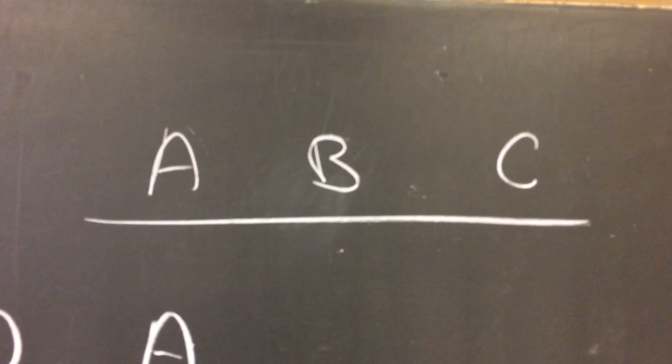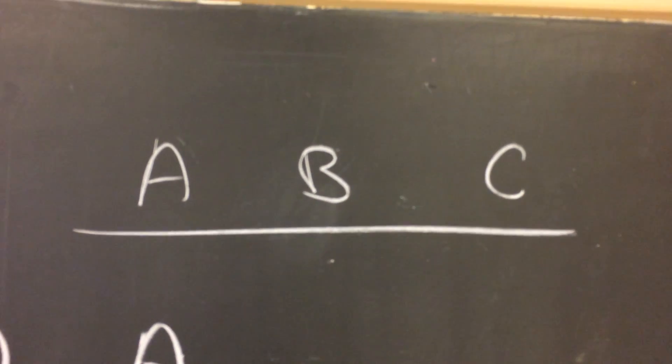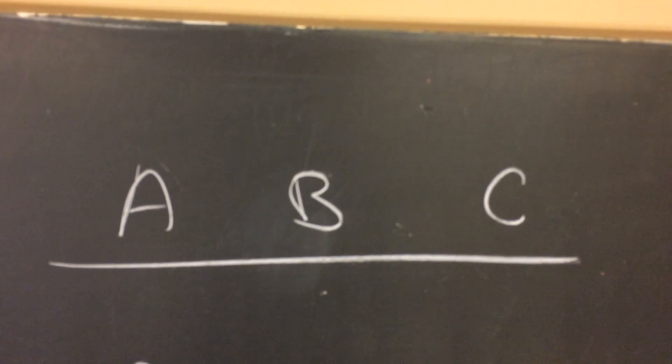So here we have a set of three items, N equals three, or N of that set equals three, A, B, and C, three letters, and how many different ways could I combine those?